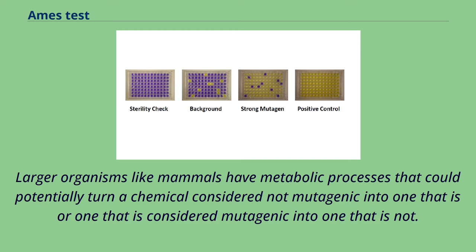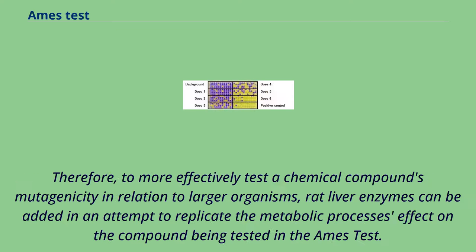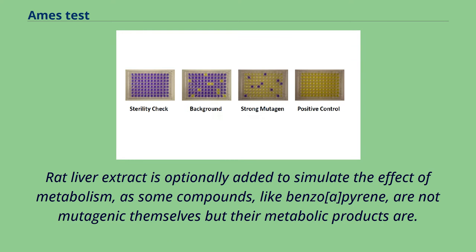Larger organisms like mammals have metabolic processes that could potentially turn a chemical considered not mutagenic into one that is, or one that is considered mutagenic into one that is not. Therefore, to more effectively test a chemical compound's mutagenicity in relation to larger organisms, rat liver enzymes can be added in an attempt to replicate the metabolic process's effect on the compound being tested in the Ames test. Rat liver extract is optionally added to simulate the effect of metabolism, as some compounds, like benzo[a]pyrene, are not mutagenic themselves but their metabolic products are.